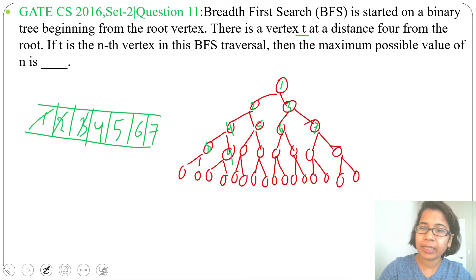In the question, it is written there is a vertex t at a distance 4 from the root. So all these vertices are at a distance 4 from the root. So t can be any node from these vertices.